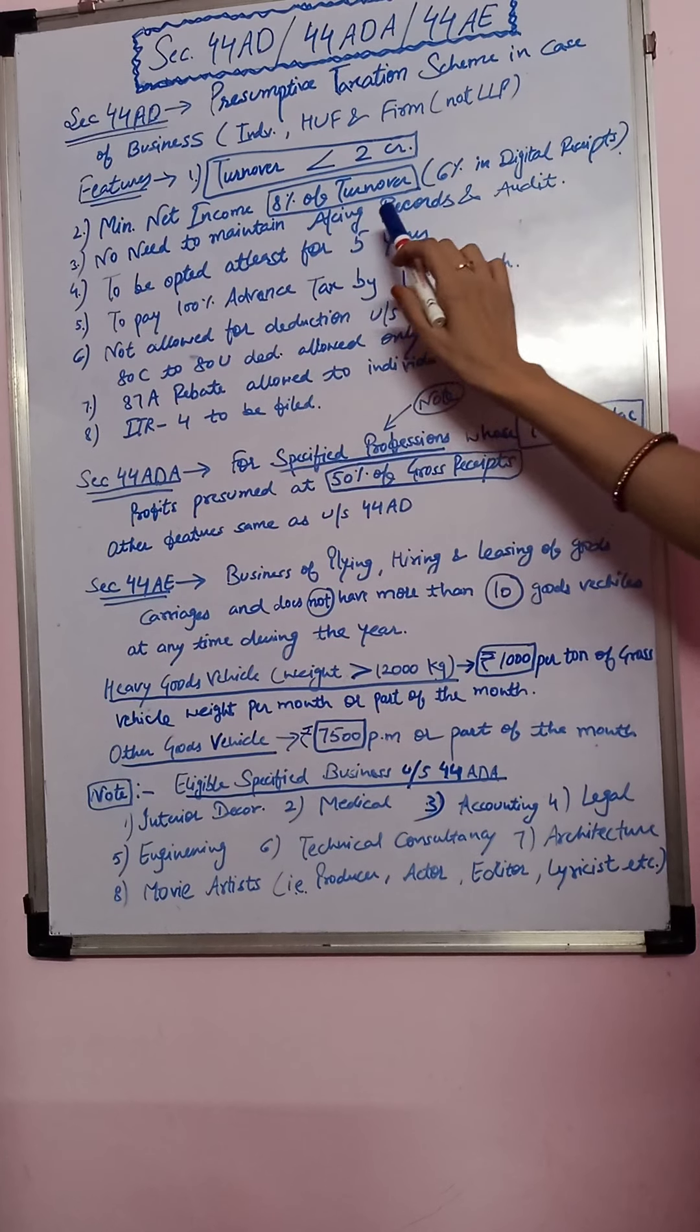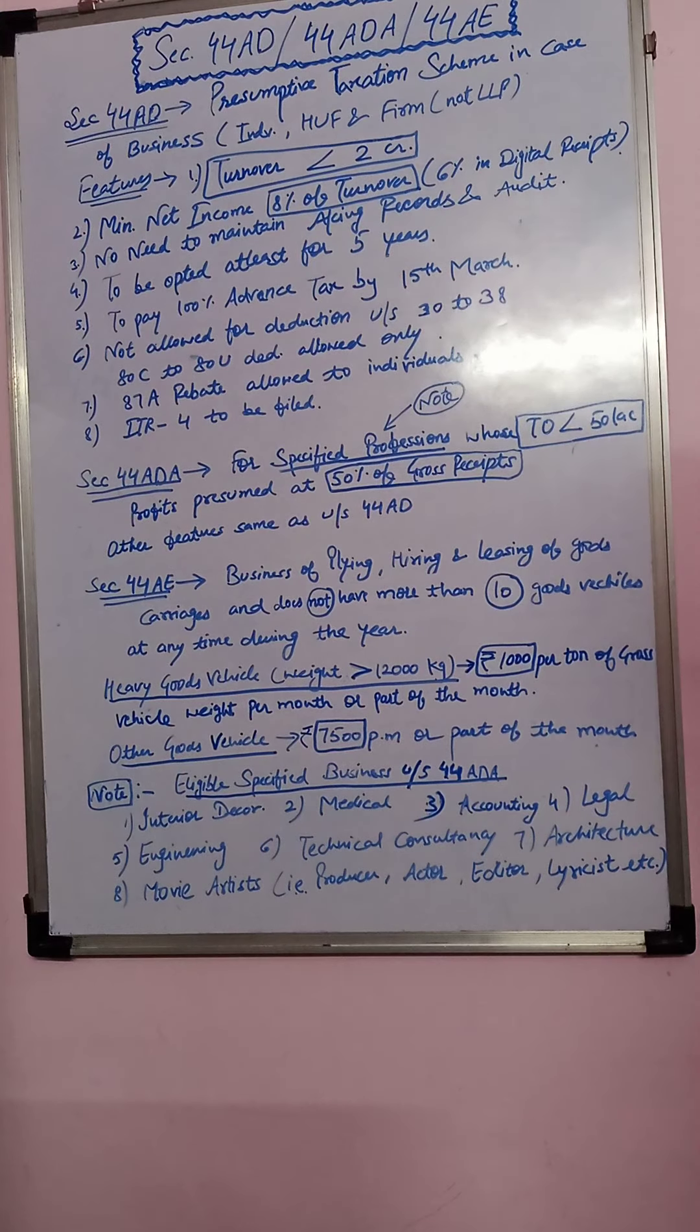Third, no need to maintain accounting records and audit. If you are opting for Section 44AD, then you don't need to maintain any accounting records and you don't need to get your accounts audited also.